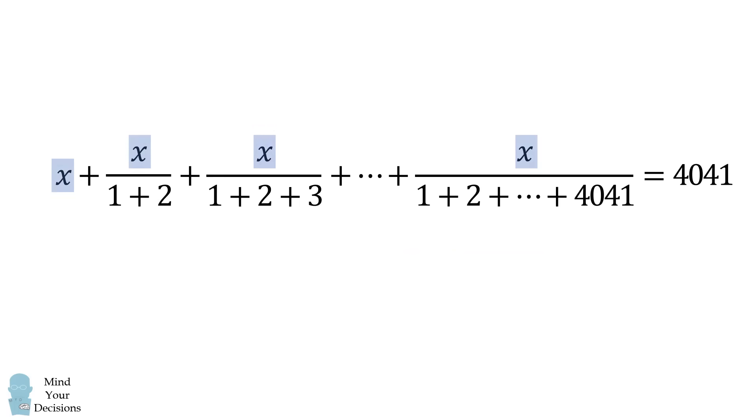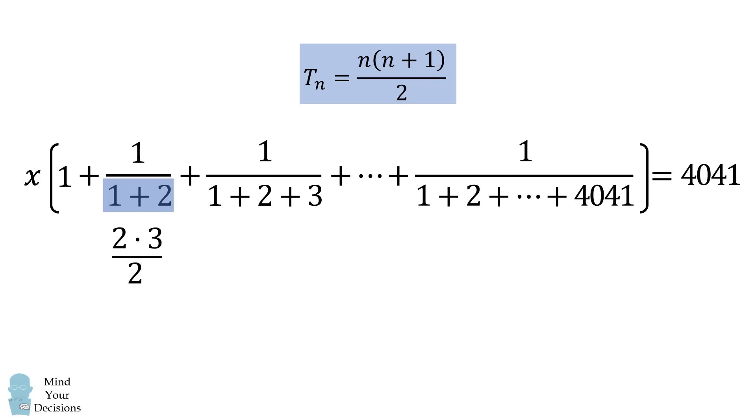The first thing we'll do is we'll notice that each of the numerators has an x. So we'll factor out an x term from every single one of these fractions. Next, we'll see that this denominator is 1 plus 2, and we'll use the formula for triangular numbers. This will be equal to 2 multiplied by 3 over 2.